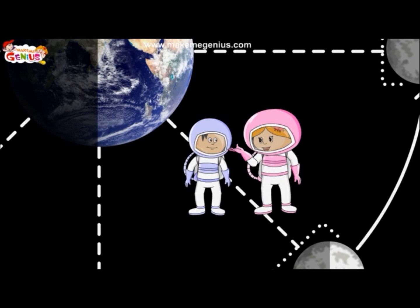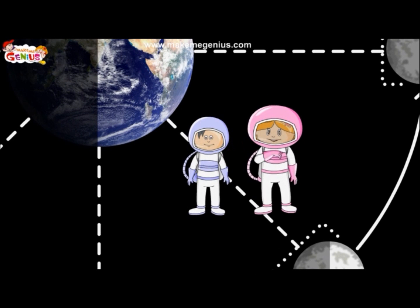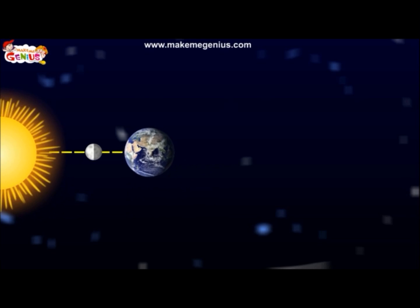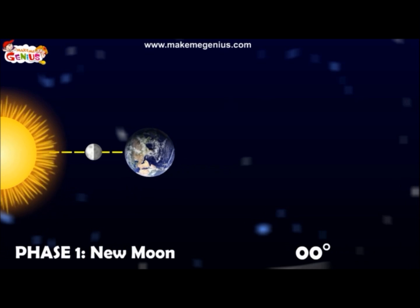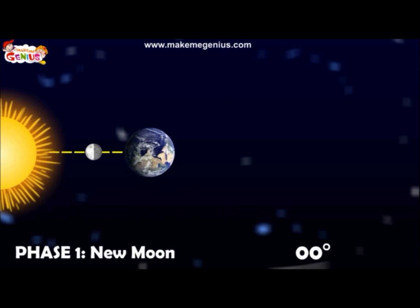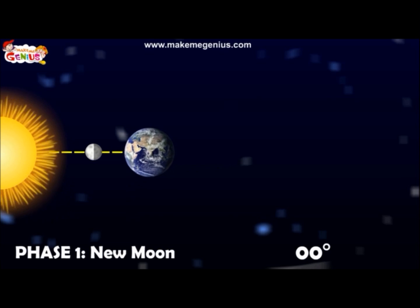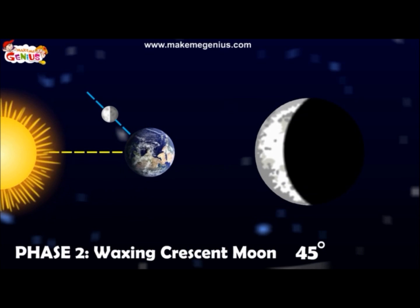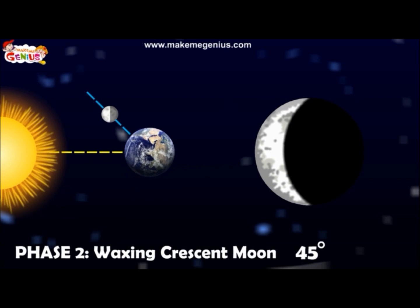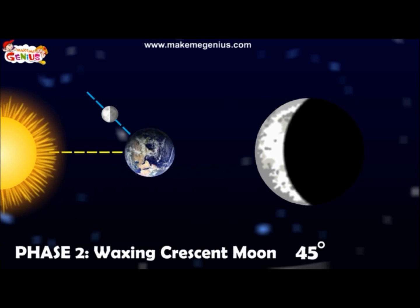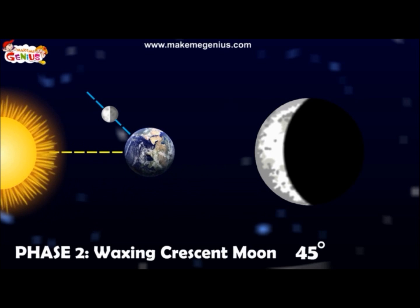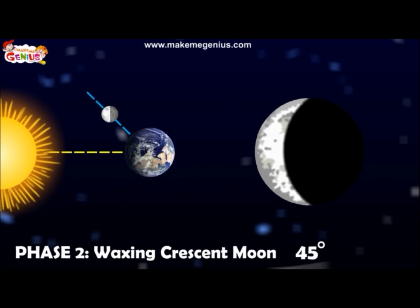Let us have a look again and understand it. Now look carefully. Phase 1 is called the new moon. In this phase, we cannot see any part of the illuminated half of the moon. Phase 2 is called the waxing crescent. Waxing means that the moon is going from a smaller size to a larger size, and crescent means that it is between new moon and half moon. It looks like a sickle, like when you take a bite out of a cookie.